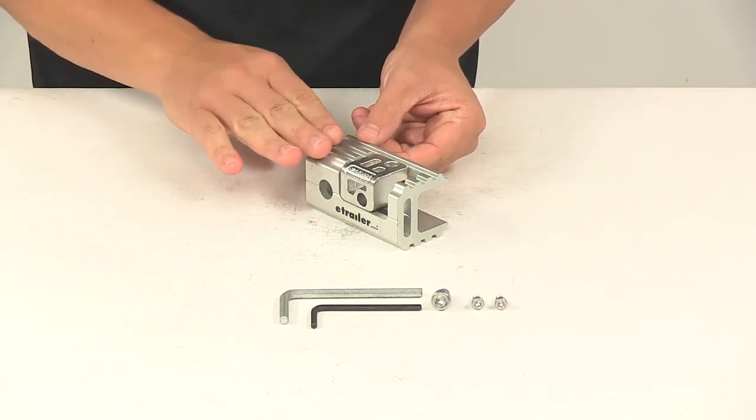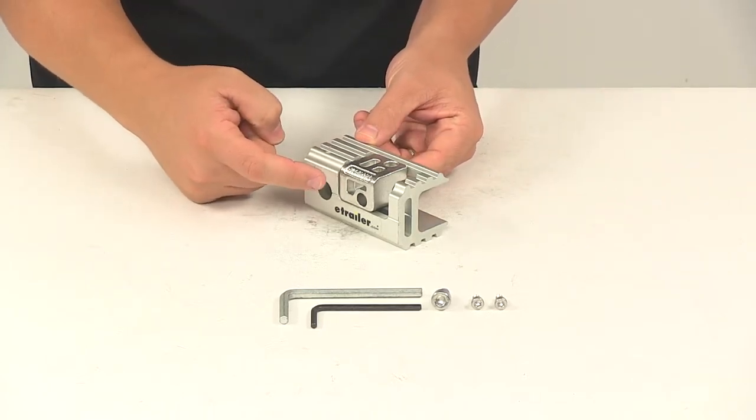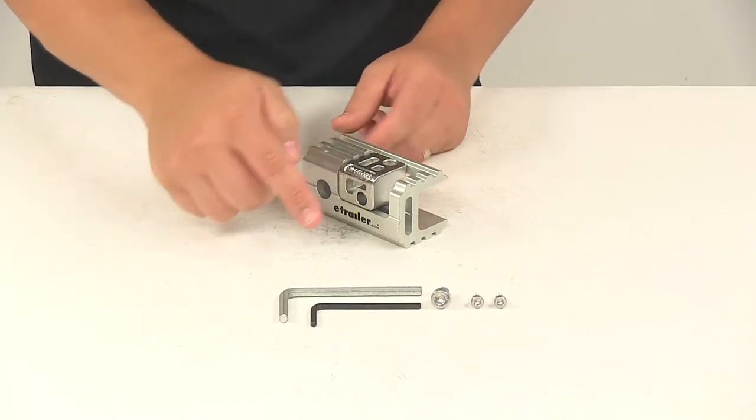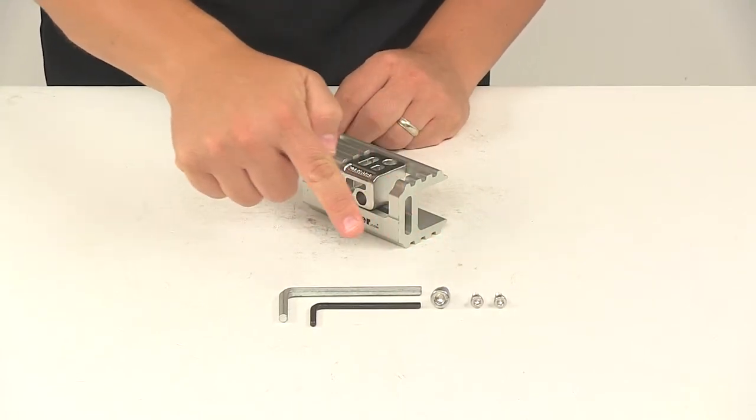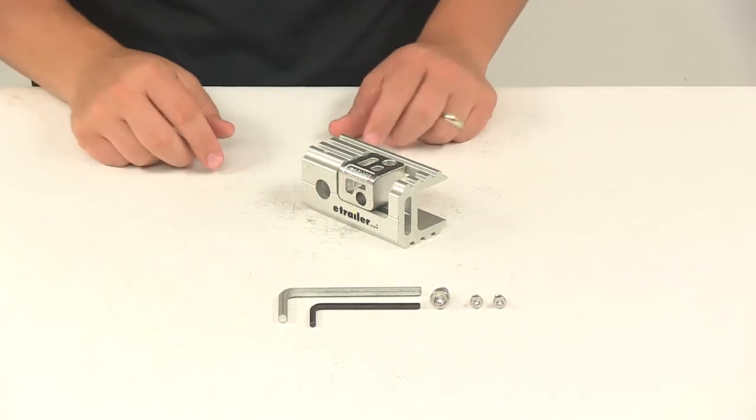The kit's going to come with your adapter, which is aluminum. It's going to come with your steel wedge spacer and the necessary mounting bolts and hex wrenches to get everything installed.